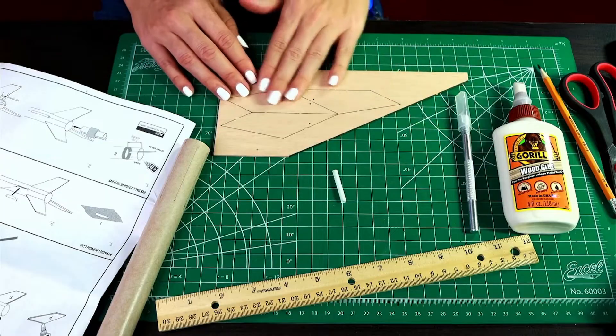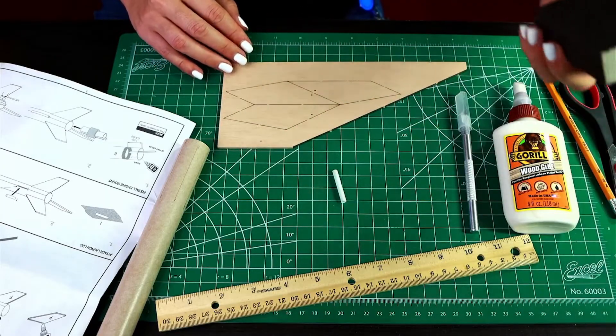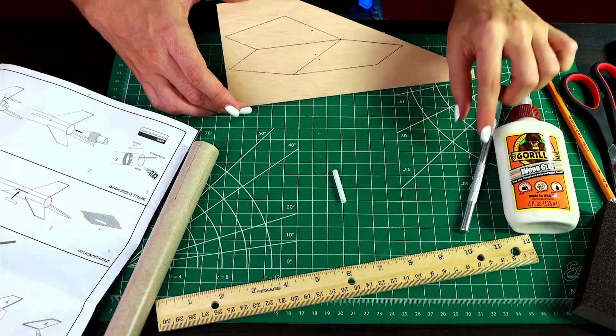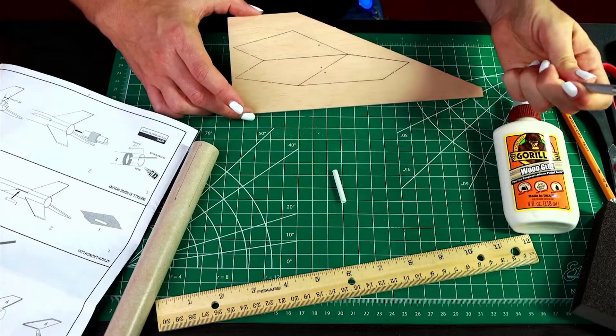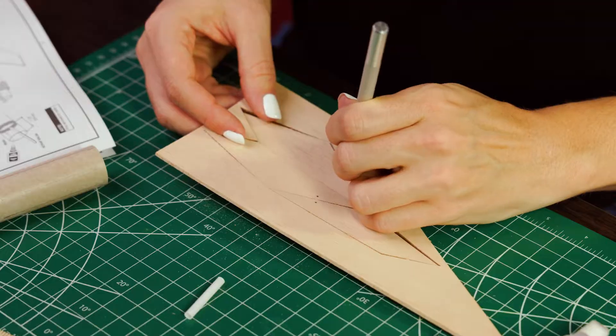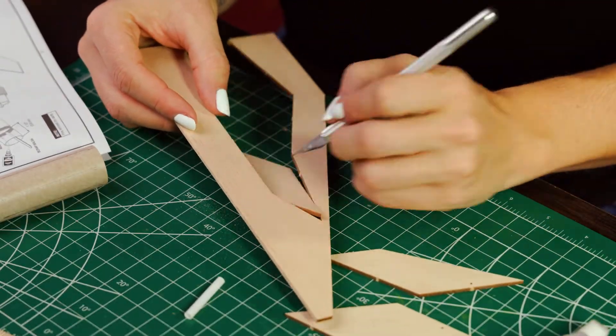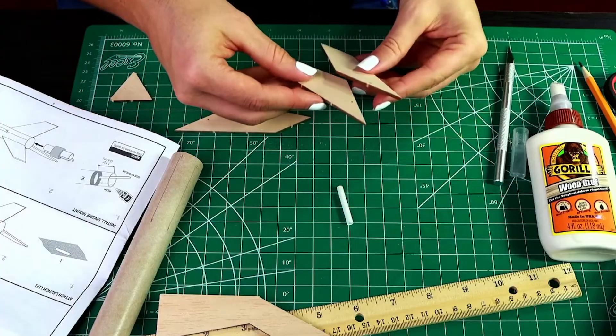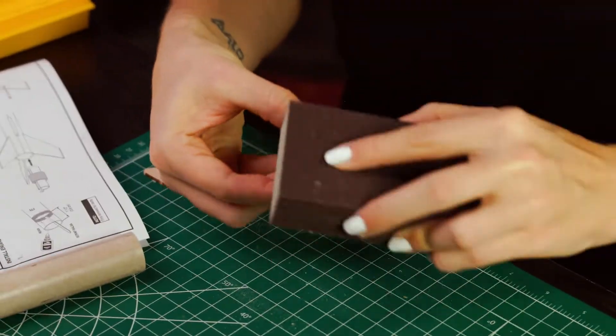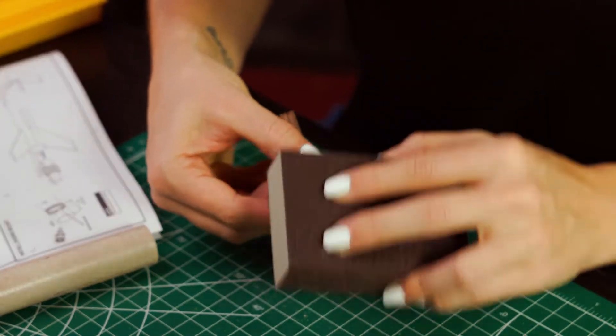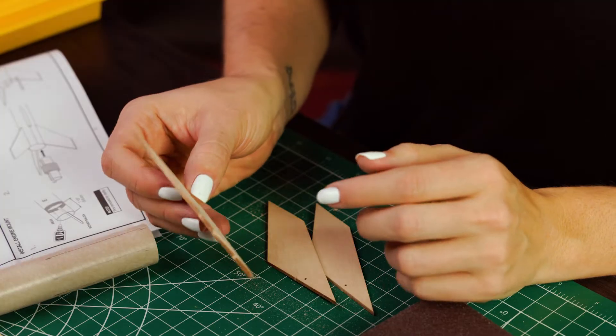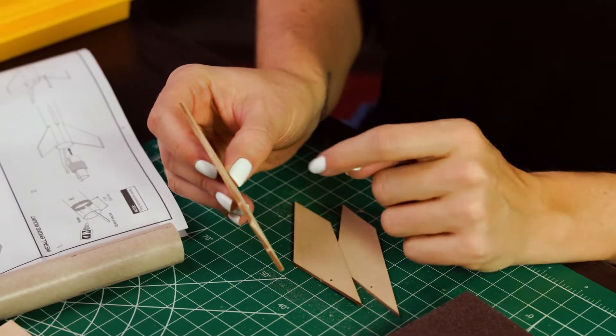Before you attach the fins, you want to prep them. You're going to sand both sides of the balsa wood first. Next, you'll use the hobby knife to pop these out of the balsa wood. Just be really careful and gentle. Then you're going to line all the fins up together and sand the edges.